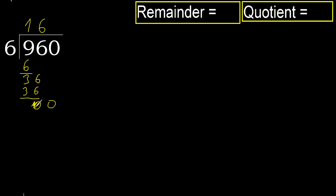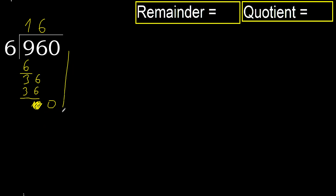Bring down 0 here. 0 is less, therefore next — that is not a number, therefore finish it. Complete with 0. Always complete with 0, because here we finish it with this number.